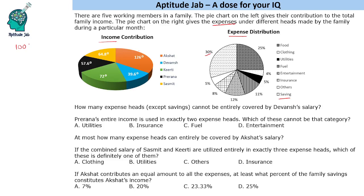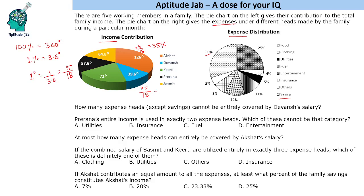One must know how to convert degrees to percentages. 100% equals 360 degrees, so 1% equals 3.6 degrees. To convert degrees to percentage, divide by 3.6, or equivalently multiply by 5/18. So 126 degrees becomes 35%. Multiplying by 5/18: 18 into 22 is 396, giving 11%. Similarly, this gives 20%. Converting further: 16% and 18%. Once you do the calculations, you get these values.